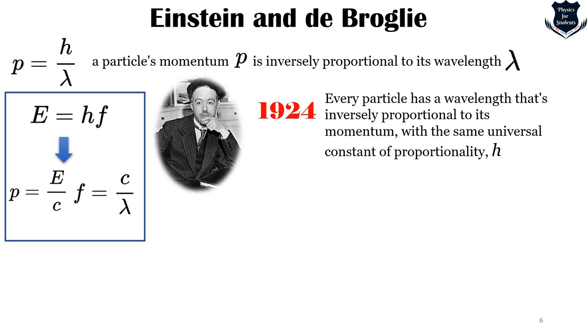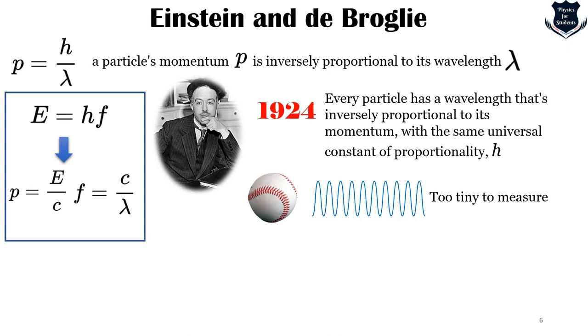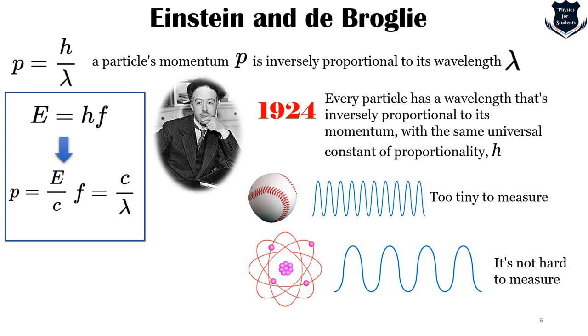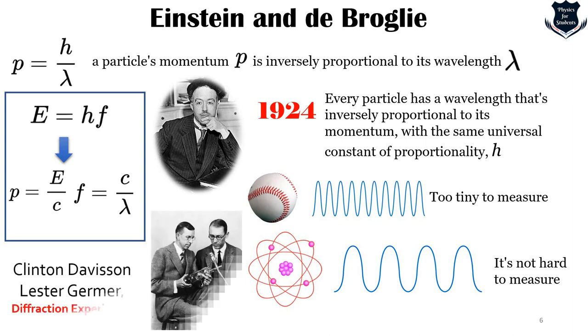The wavelength of a baseball, which has a large P, is too tiny to measure, compared to low mass or subatomic particles such as electrons which has a small P and is not difficult to measure. In order to measure the wavelength through a diffraction experiment, it was these two gentlemen, Clinton Davison and Lester Germer, who did an accidental experiment after Louis de Broglie proposed it. More recent experiments have measured the wavelengths of all sorts of subatomic particles as well as entire atoms and molecules.